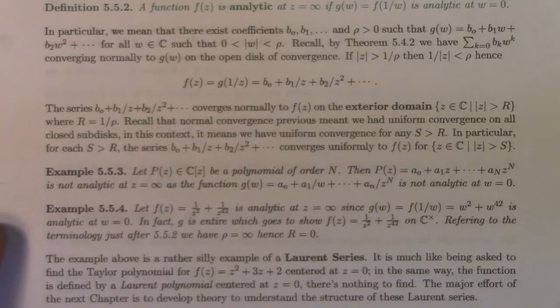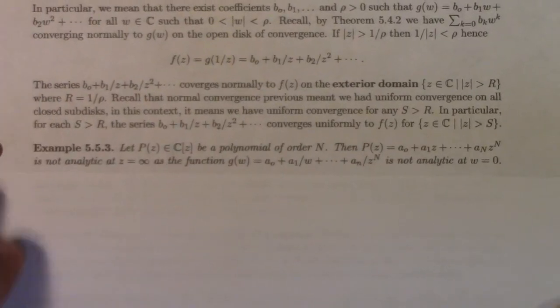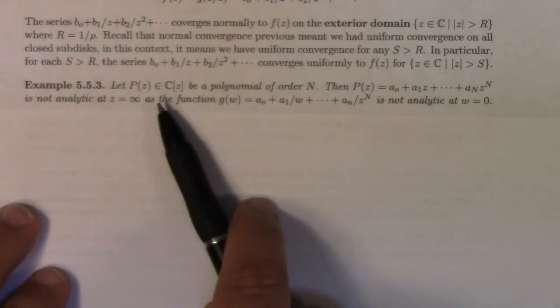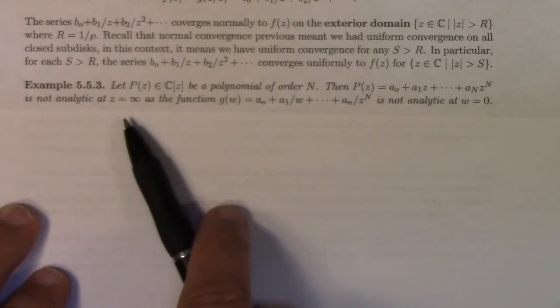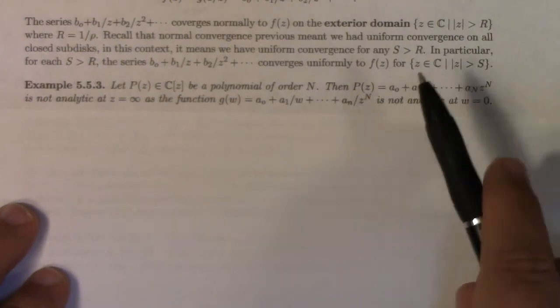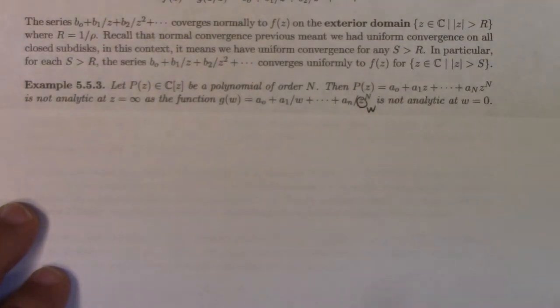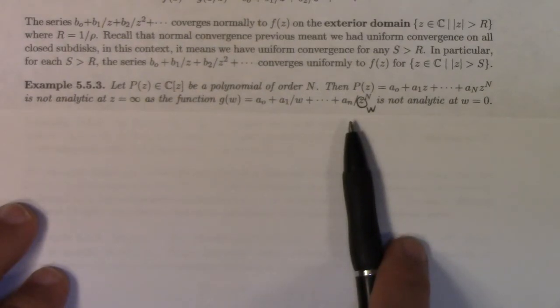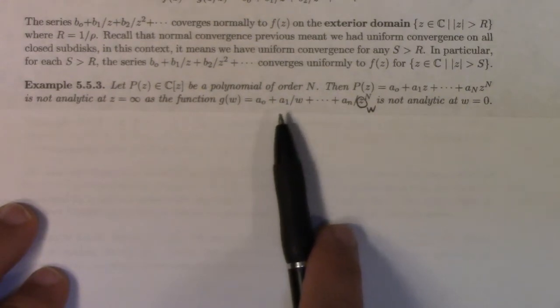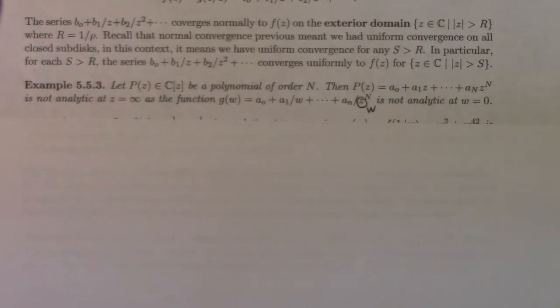Here is example 5.53. Suppose you've got a polynomial of order n. It's not analytic at z equals infinity, because if you look at the corresponding g of W, you get this — and that is not analytic at W equal to zero. What does it mean to be analytic? It means the formula for the function can be expressed as a power series centered at the point where we're investigating the analyticity. This one fails because it's not a power series in W.